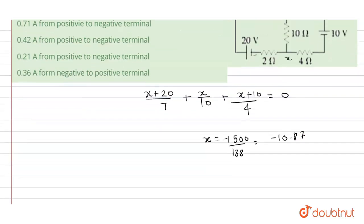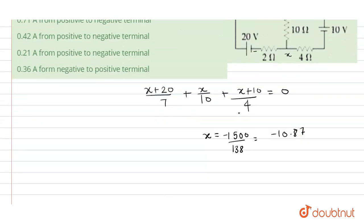Hence current from this branch will be I equals 10.87. This value in negative and this value in positive upon 4. Now on solving this value.